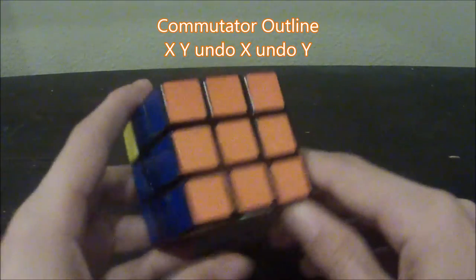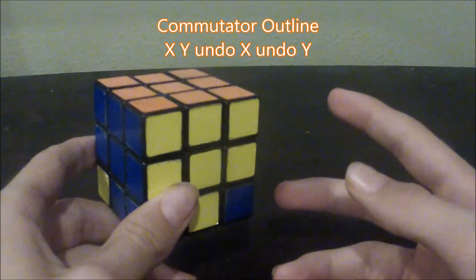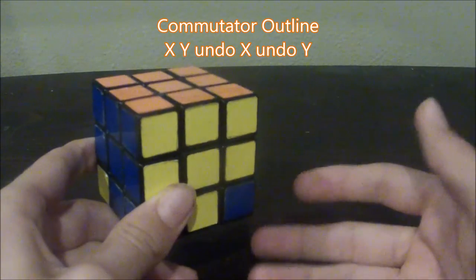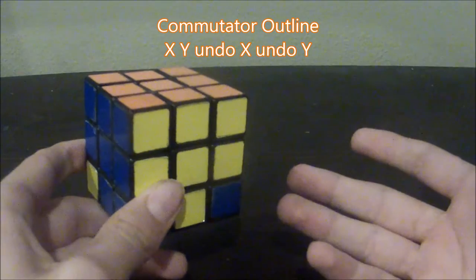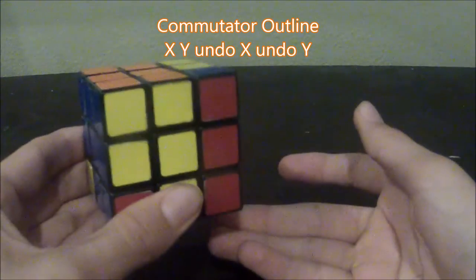So, X could be something, and then Y is another thing. Undo the first thing, then undo the second. So X and Y could represent one turn, which could be just like that, one turn.